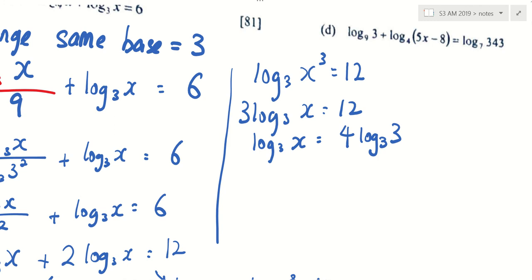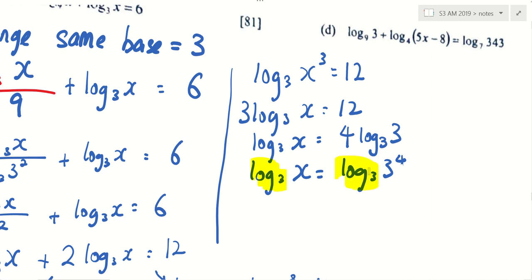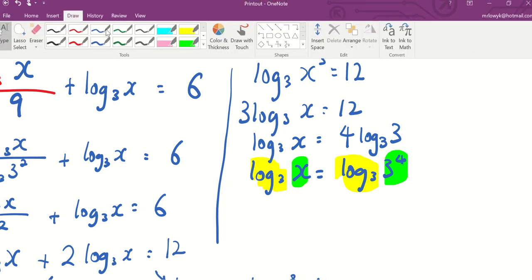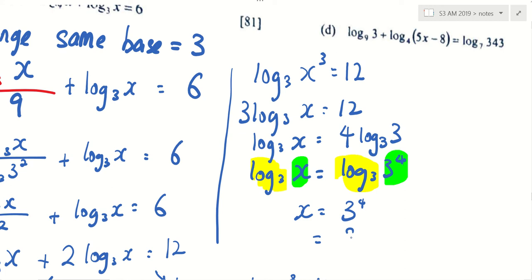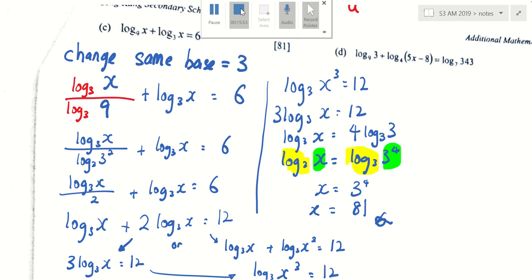Do you see the answer appearing? Log base 3 on both sides — what can you say about the inside? They are the same, so x equals 3 to the power 4, which equals 81. You have to write 81. Wow, 15 minutes already — I'll stop the video here.